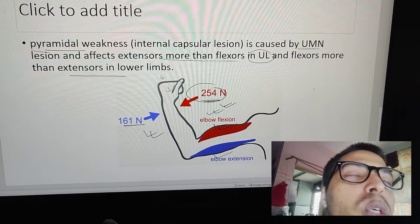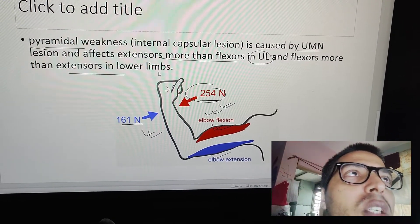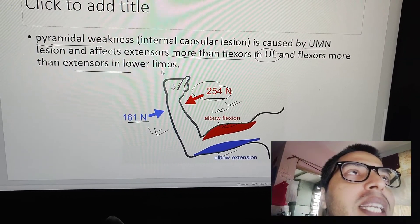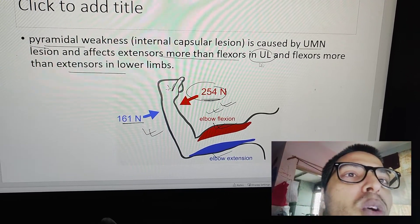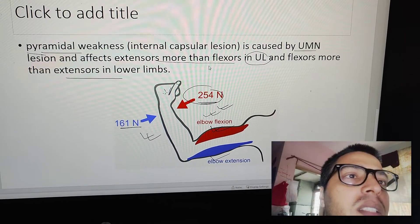In lower limbs, as I already mentioned, hip flexors and knee flexors are weaker compared to hip extensors and knee extensors. That's why the flexors are more affected in lower limbs compared to extensors.